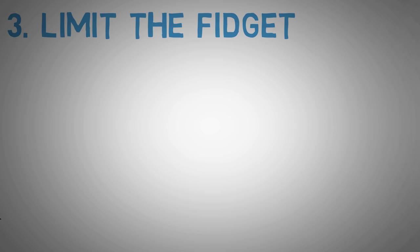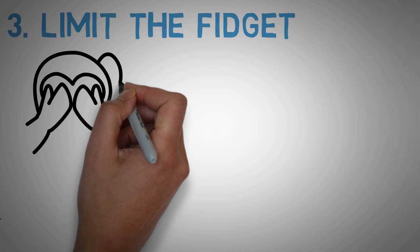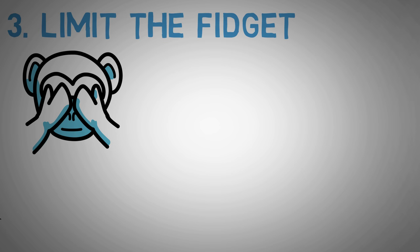Technique number three, limit the fidget. Professional communicators consciously suppress any signs anyone could mistake for shiftiness. They don't massage their arm when it tingles or rub their nose when it itches. They never put their hands on their faces. They don't loosen their collar when it's hot, nor do they blink constantly. They put up with discomfort, because they know fidgeting undermines their credibility.